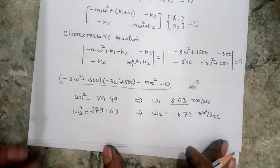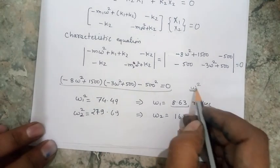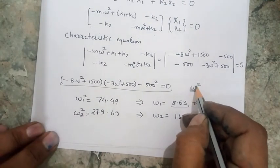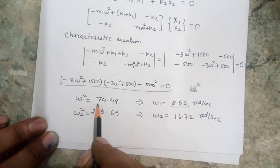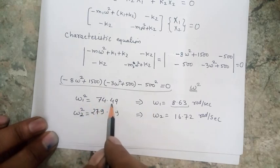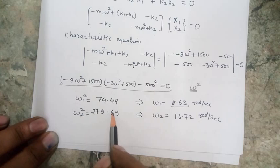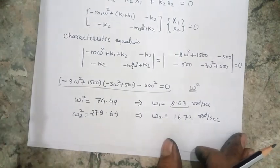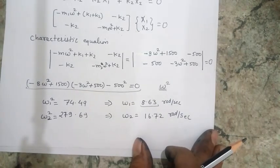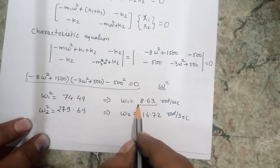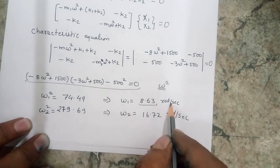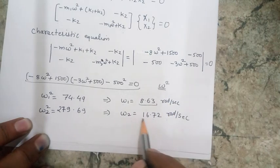When I solve the quadratic equation treating ω² as the variable, I get two roots: ω1² and ω2², with values 74.49 and 279.69. These two roots are nothing but the two natural frequencies of my system. Taking the square root, the first natural frequency is 8.63 rad/s and the second natural frequency is 16.72 rad/s.